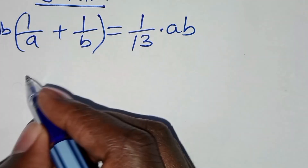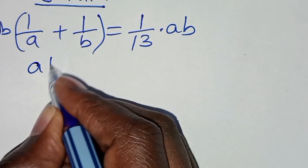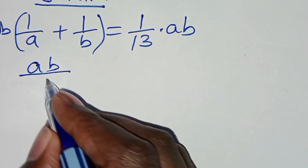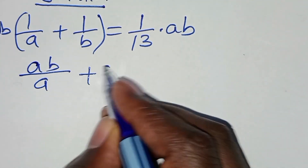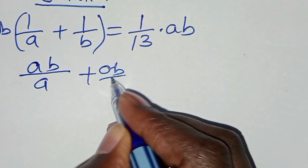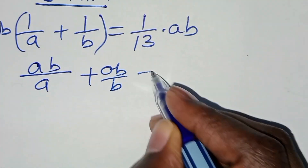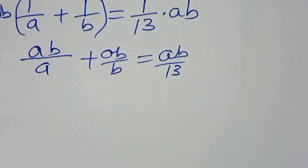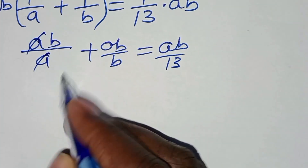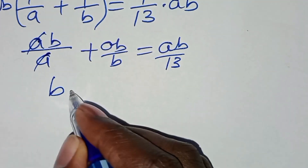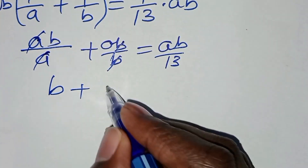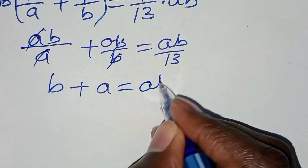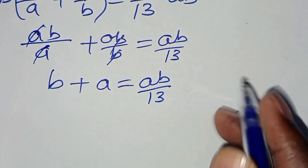So that we'll have AB divided by A, plus AB divided by B. This is equal to AB over 13. Now let's simplify: this gives B plus A, which is equal to AB divided by 13.